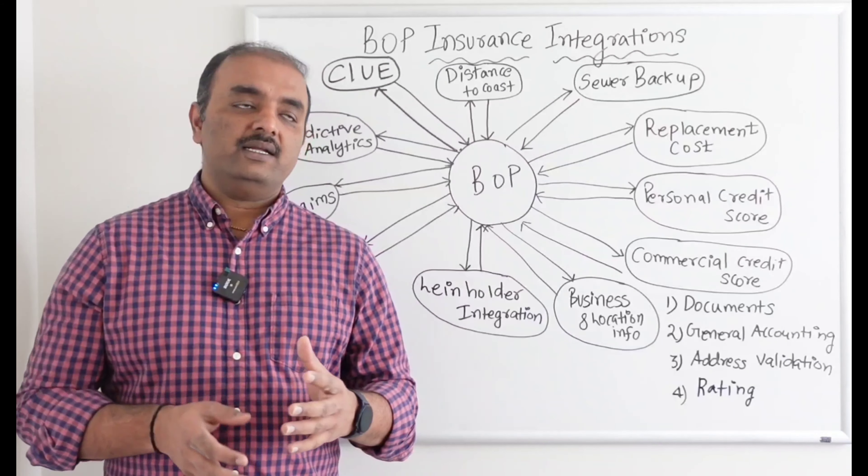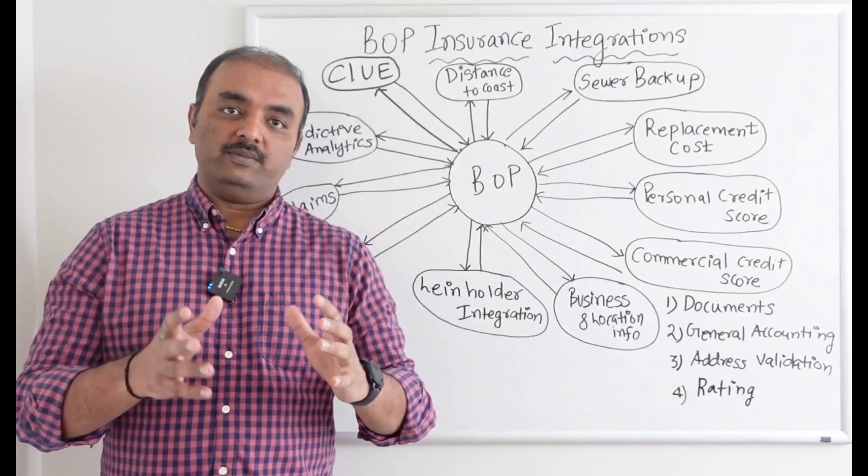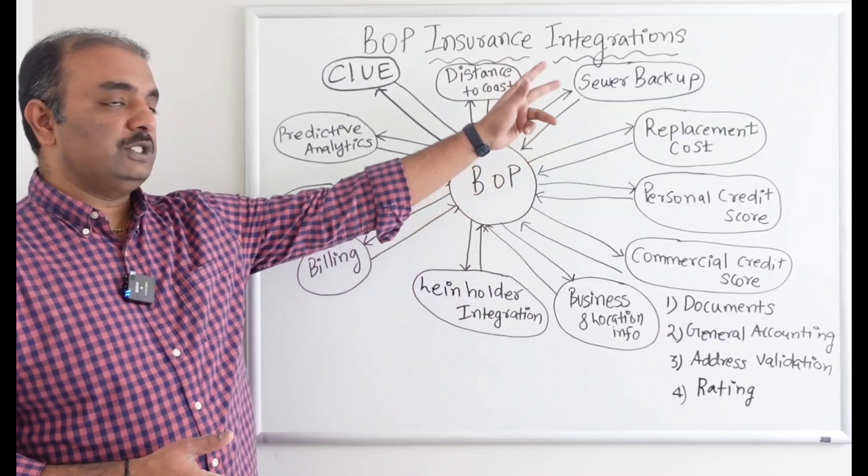The second integration is sewer backup. Insurance companies want to assess basement and sewer backup risk. Sewer backup occurs when drainage water does not drain properly, potentially flooding the basement. This integration provides a rating value, perhaps between 1 and 100. A rating of 10 means the sewer is well-maintained with low risk, while a rating of 80 indicates a potential sewer backup concern for the insurance company.